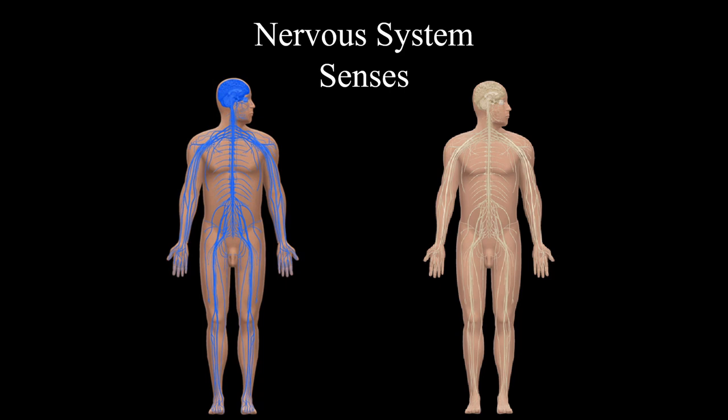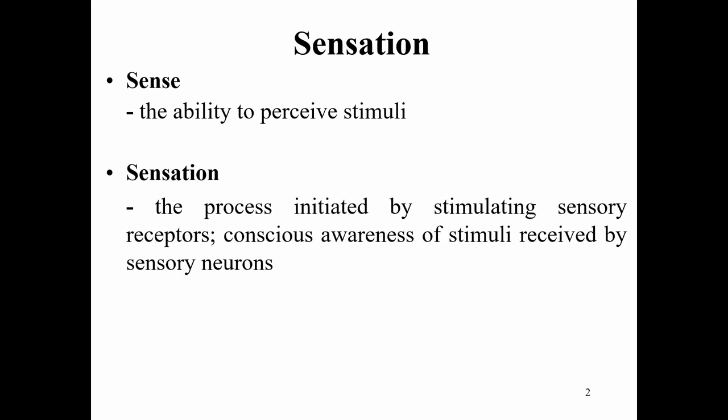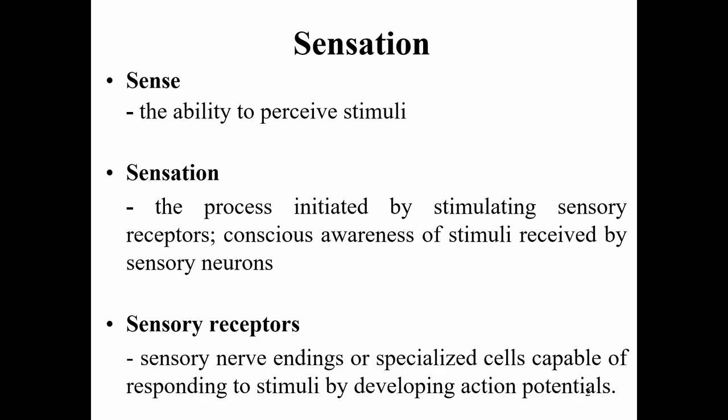Good morning everyone. Today we're going to discuss the nervous system senses and talk about each of the senses in the human body. First, we must define sensation. Sensation is the process initiated by stimulating sensory receptors — the conscious awareness of stimuli received by sensory neurons. We have sensory receptors that are special nerve endings, specialized cells capable of responding to stimuli by developing action potentials.